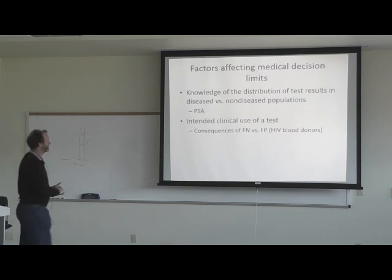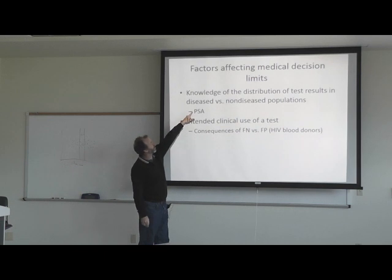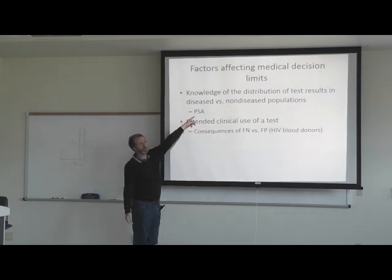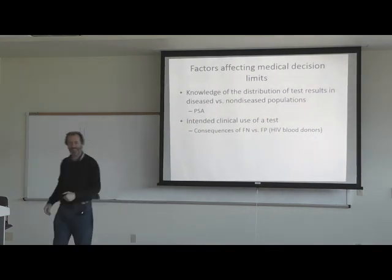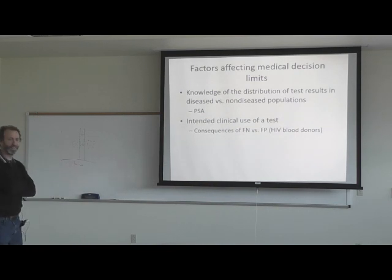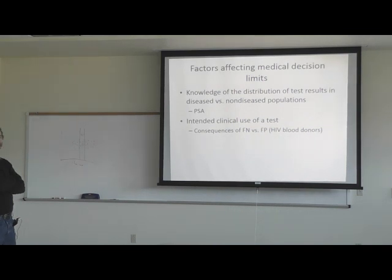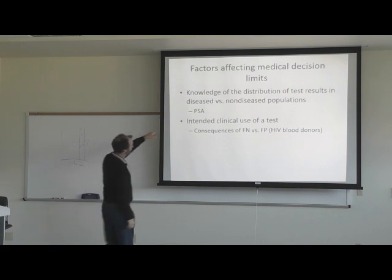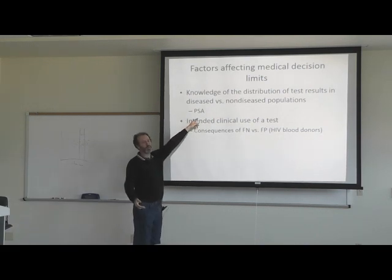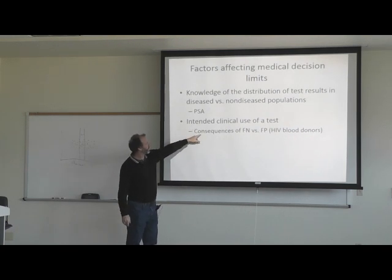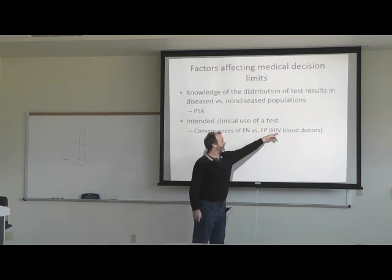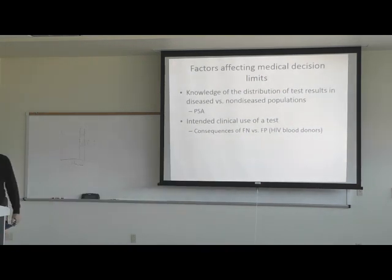Factors affecting medical decision limits include knowledge of the distribution of test results in disease versus non-disease patients. The PSA test, for example, gave a lot of false positives and people would think they had cancer. Intended clinical use of a test, consequences of false negatives versus false positives — as illustrated by the HIV blood donor example.